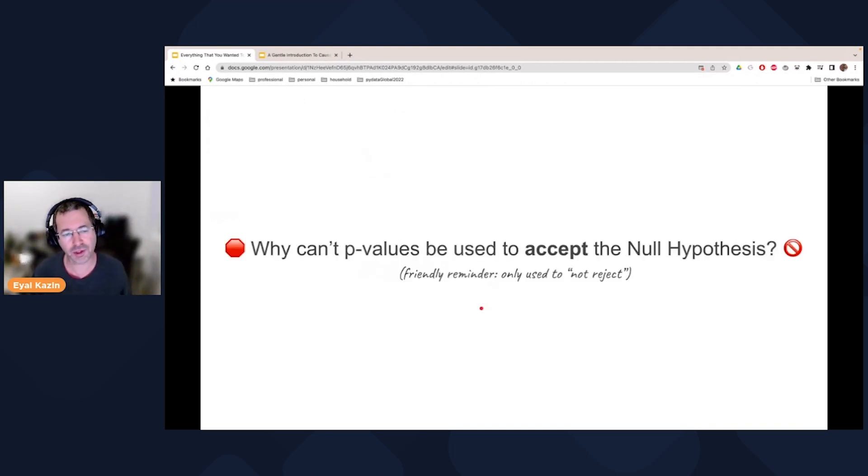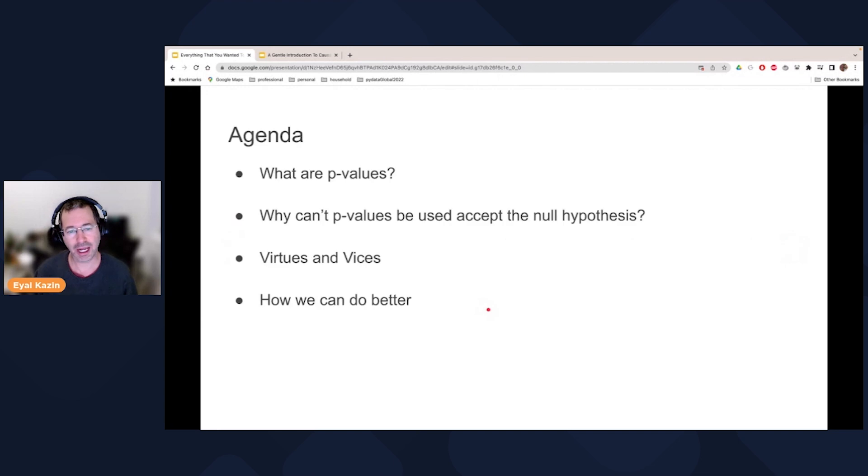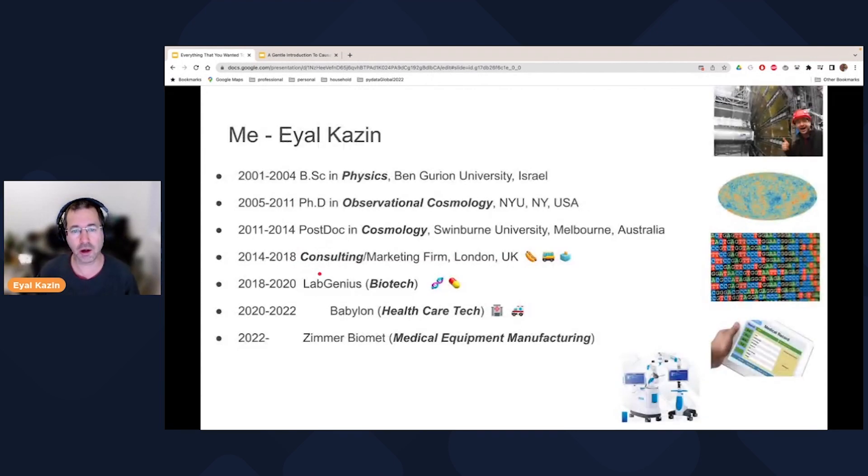In particular, I've been wondering, I had an uneasy feeling of why is it that we can use it to reject the null hypothesis, but never to accept it. And so I'm not assuming you know what p-values are, but you probably heard about them being mentioned when somebody mentions the significance of a signal. And so I'll introduce what they are. And then the main topic is why can't we use them to accept the null hypothesis? I'll then talk about virtues and vices and how we can ultimately do better.